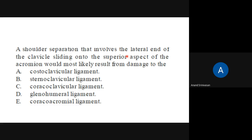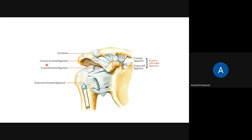So it's between coracoclavicular or coracoacromial. The coracoacromial ligament is between the coracoid process and the acromial process of the scapula - if this is damaged, the clavicle is not going to be affected. So the answer is coracoclavicular ligament. This is the one which holds the coracoid process to the clavicle. If you understand the name, it is easier: coracoacromial goes between coracoid and acromion; coracoclavicular goes between coracoid process and clavicle.